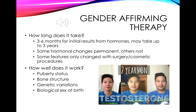Gender-affirming therapy can take three to six months for initial hormone results, but individuals may notice continued changes over a course of up to three years. Some changes are permanent and others are not. Some features require surgery or cosmetic treatments like filler injections or Botox to be more effective. How well therapies work depends on whether the patient has undergone puberty, the patient's bone structure, and genetic variations. Biologic sex also makes a difference, so some transitions will be easier than others depending on the direction of transition.